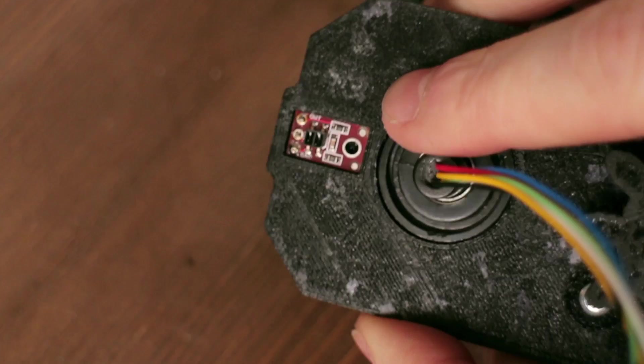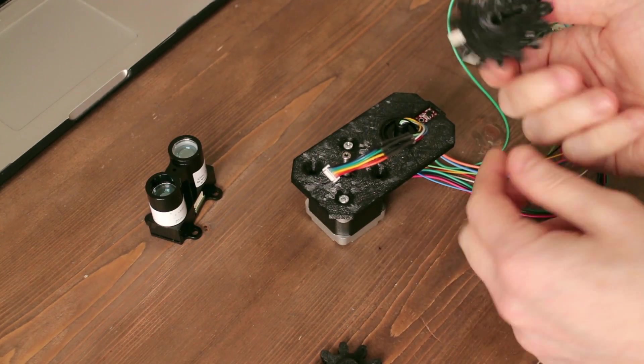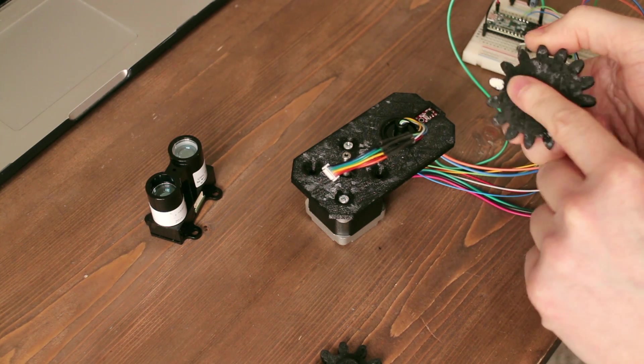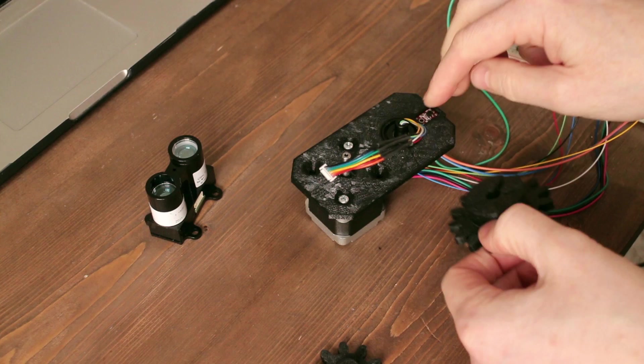That's just emitting a light and looking for the intensity of the reflected light that comes back. To handle that I've got a little white patch of paint on there, so on each full rotation it knows where it is.